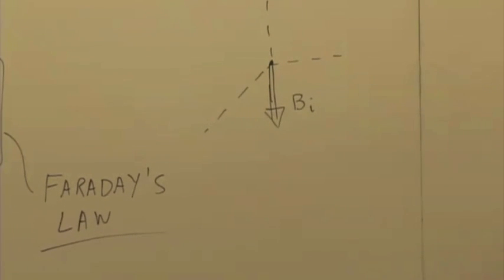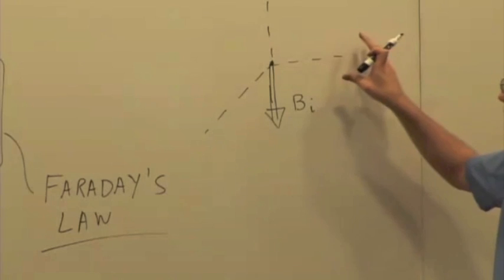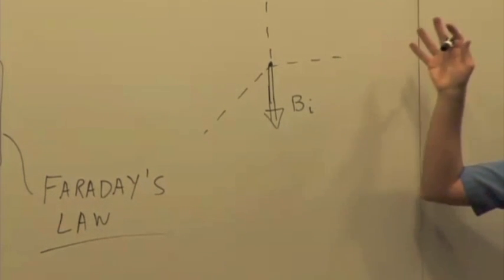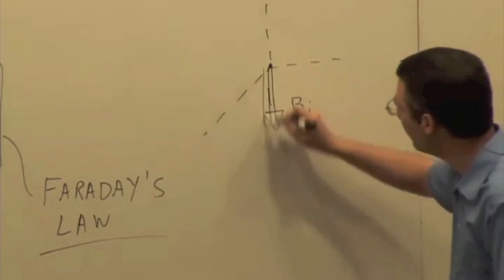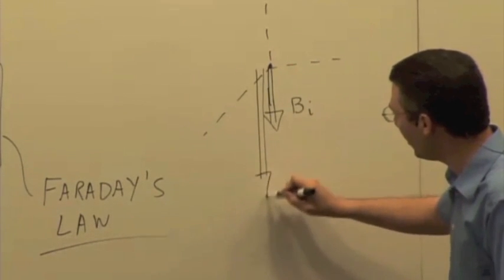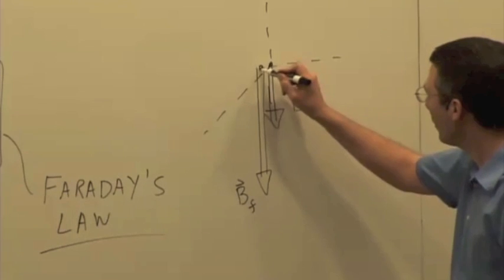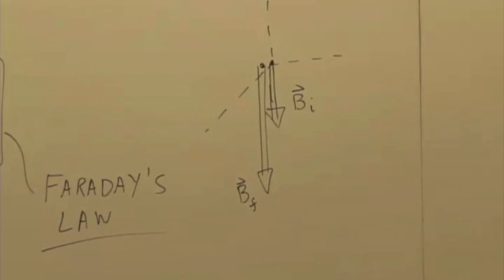I move the bar magnet closer. What happens to the magnetic field? It gets larger, right? So B final is pointing down, but I should draw the vector bigger. So there's B final.